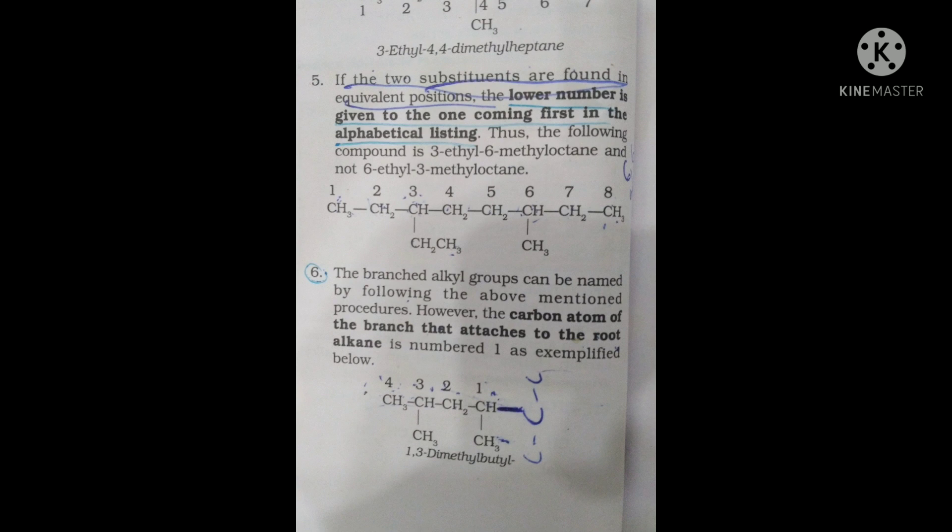Alphabetically, 'ethyl' comes before 'methyl'. So the ethyl group is given the lower number. The compound is named 3-ethyl-6-methyloctane, because the root chain has 8 carbons (octane).